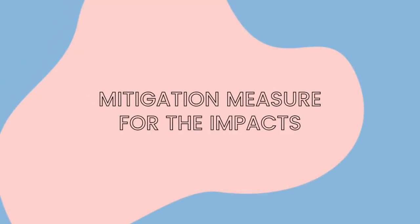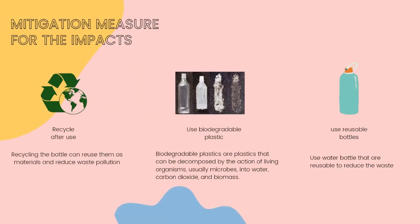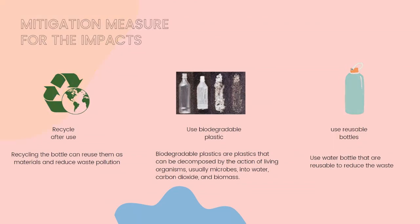The next section provides some mitigation measures for the impacts of plastic bottles. First, recycle after use — recycling the bottle can reuse them as materials and reduce waste pollution. Second, use biodegradable plastic — biodegradable plastics can be decomposed by the action of living organisms, usually microbes, into water, carbon dioxide, and biomass. Third, use a reusable bottle to reduce the production of waste.